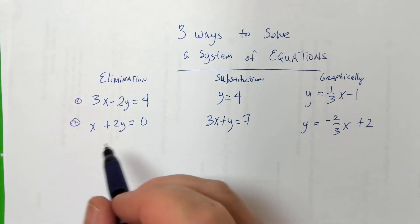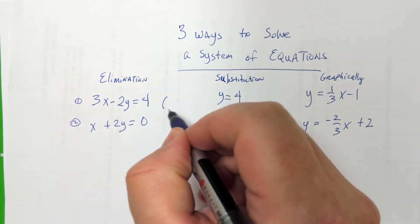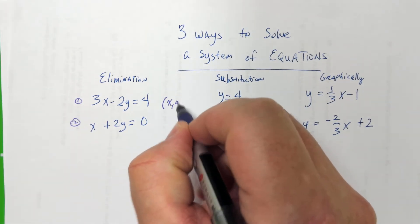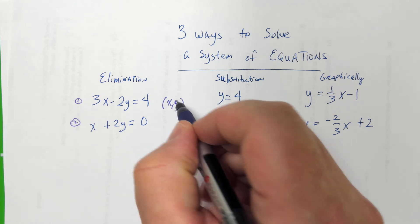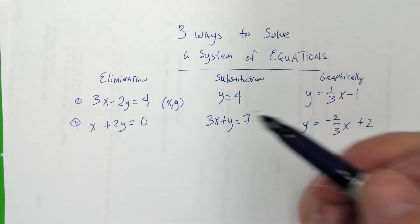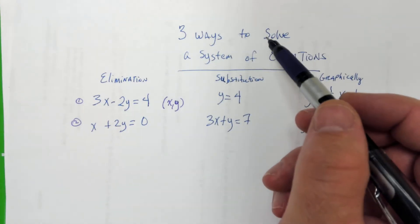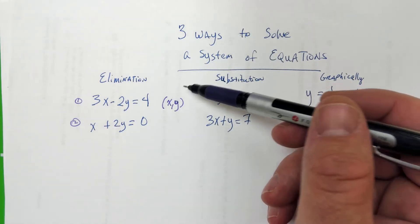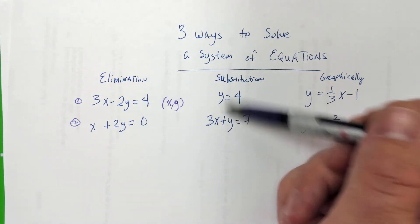So like, for example, your solution is going to be an ordered pair, like an x and a y. That's supposed to be y. It's going to be an x and a y that works for both equations, that makes both true. So whenever it says solve a system of equations, you're looking for an ordered pair that's true for both.